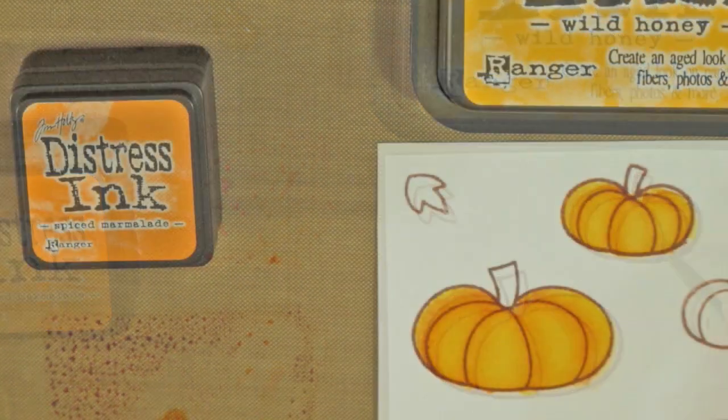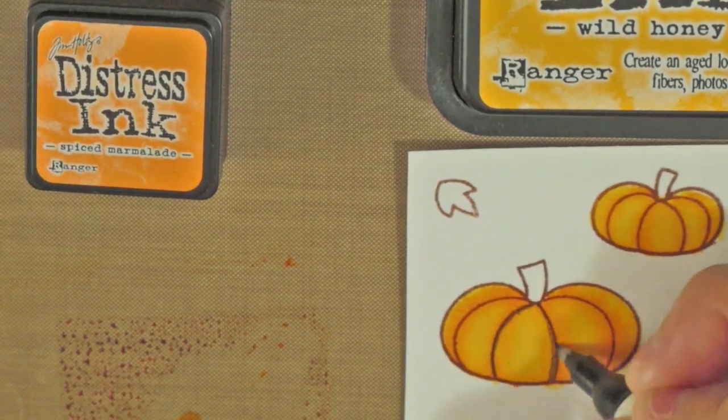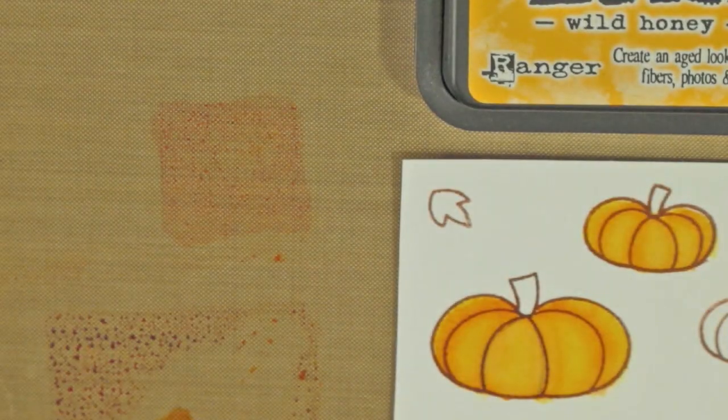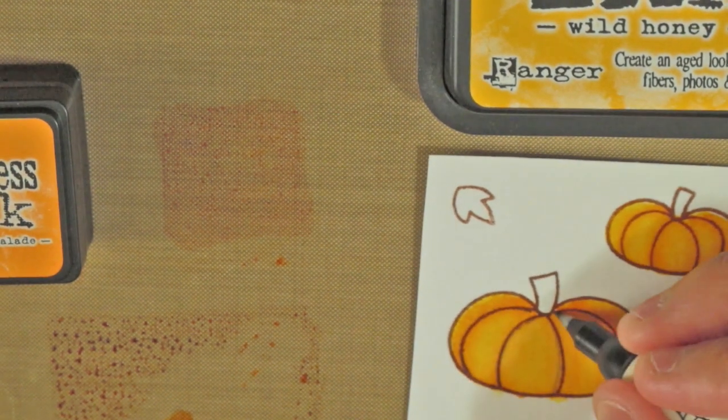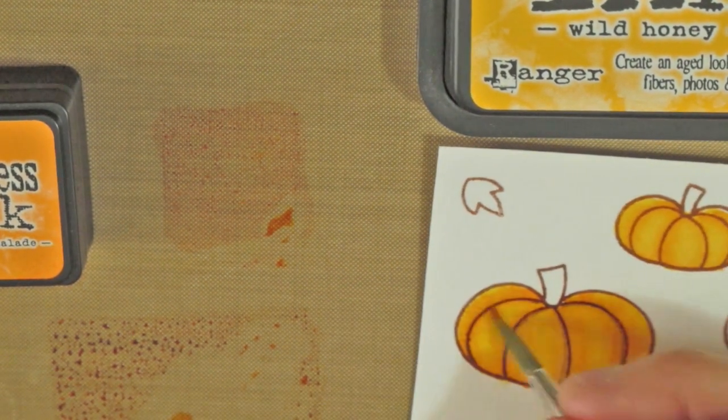To add even more dimension, I will use my gathered twigs distress marker again on the darkest areas of the image. When it looks too dark or harsh, I use my paper towel and dab it on the paper to remove a bit of color. I am blending it with water and spiced marmalade.